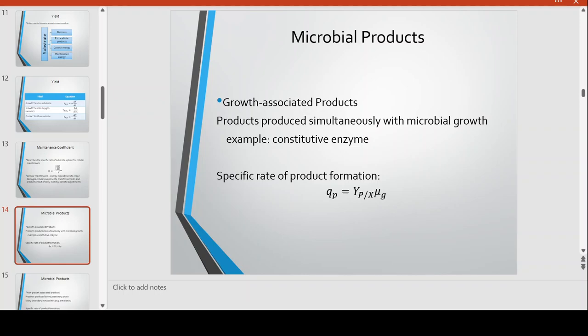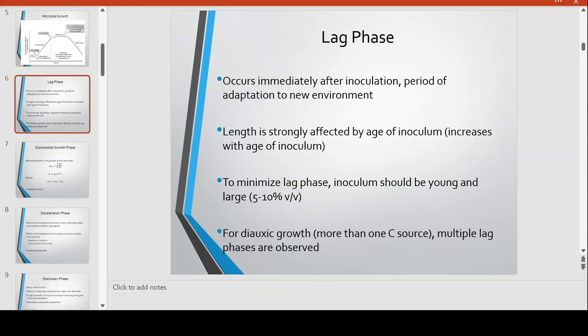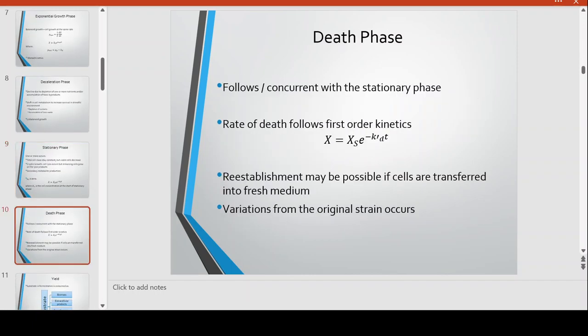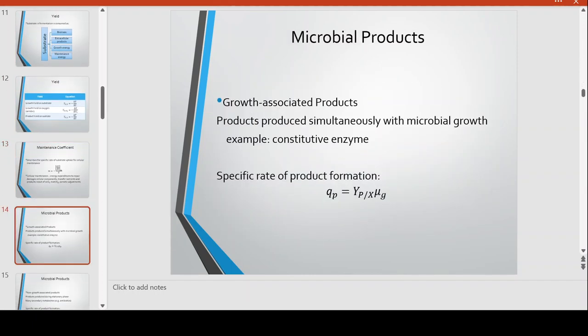In this equation, you have the yield of product per cell along with the term mu G — the kinetic growth rate constant. Mu G is associated with growth-associated products because they are closely linked to the growth of the cells. The rate of product formation of a growth-associated product is proportional to the growth rate of the cells: if growth is fast, product formation is fast; if slow, it is slow.